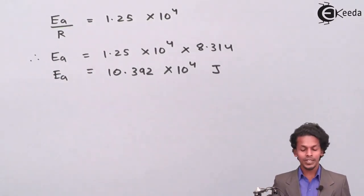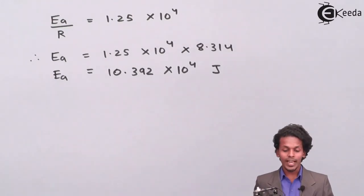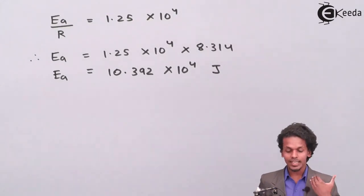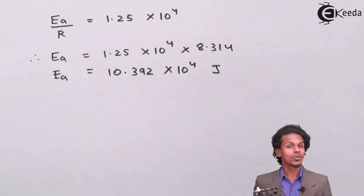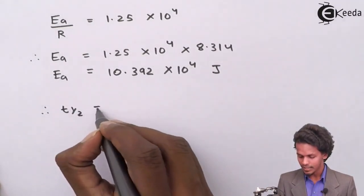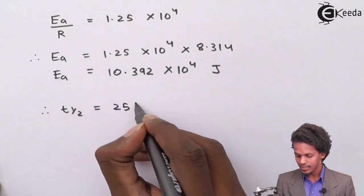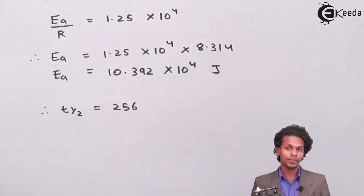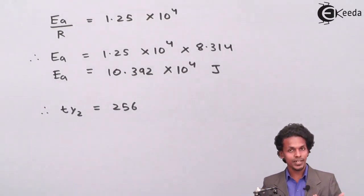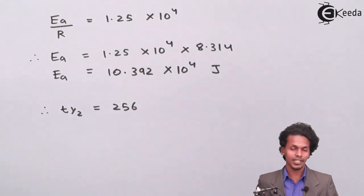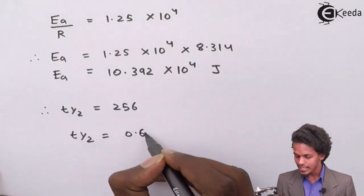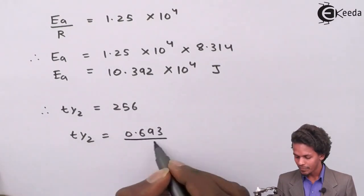Now we are going to calculate the value of K, because the half period is given as 256 minutes. We know the formula for a first order reaction: t½ = 0.693 divided by K.